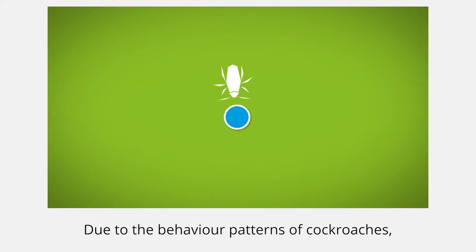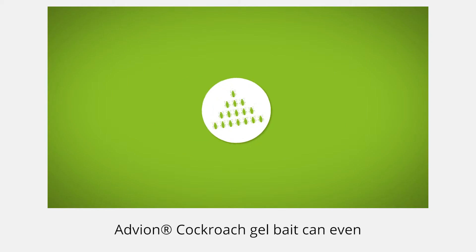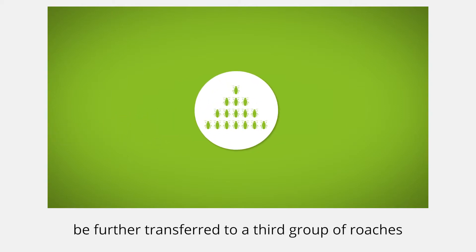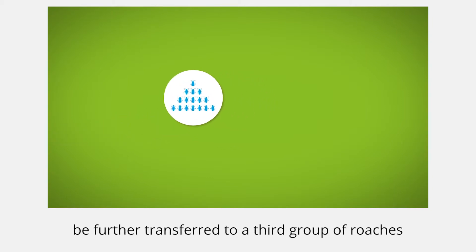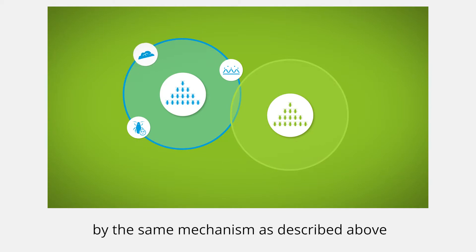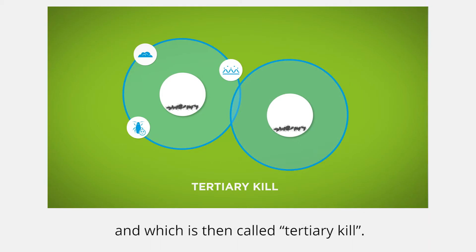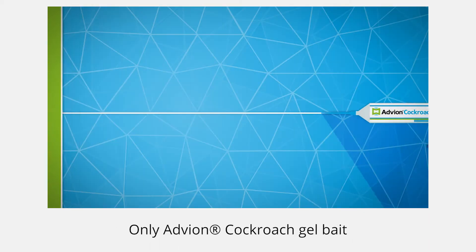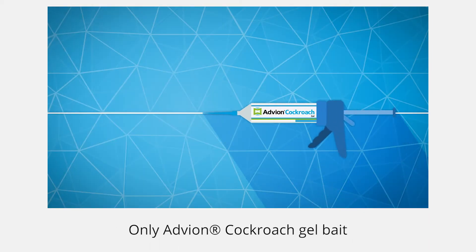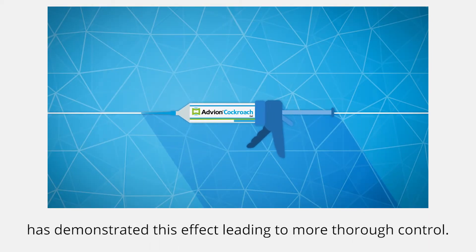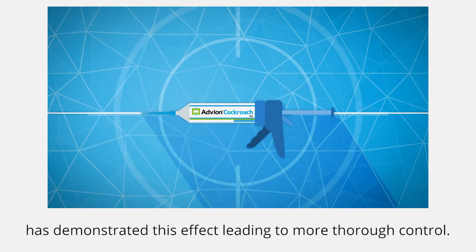Due to the behaviour patterns of cockroaches, Advant cockroach gel bait can even be further transferred to a third group of roaches by the same mechanism as described above, which is then called tertiary kill. Only Advant cockroach gel bait has demonstrated this effect, leading to more thorough control.